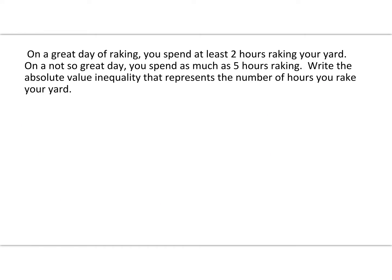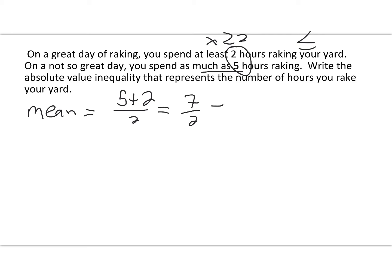Let's do another one. On a great day of raking, you spend at least two hours raking your yard. On a not so great day, you spend as much as five hours raking the yard. Write an absolute value that represents the number of hours you rake your yard. This is a typical 'and' statement because we're going to be between two and five, so the symbol is still less than or equal to. Finding the mean: x2 of five plus x1 of two divided by two — seven divided by two is three and a half.